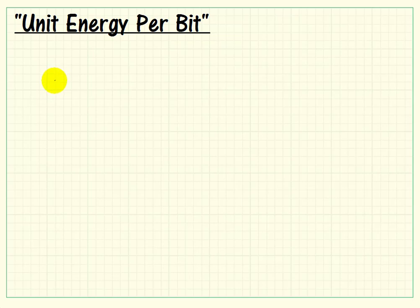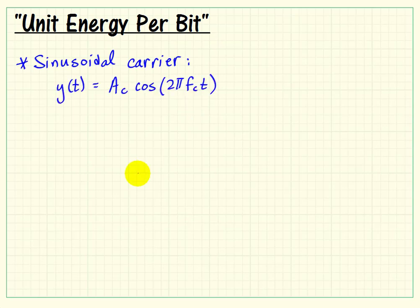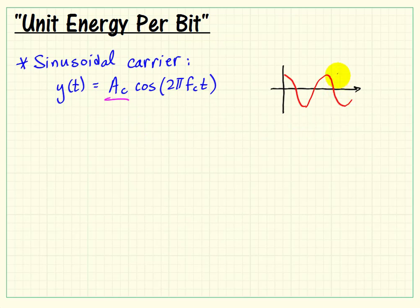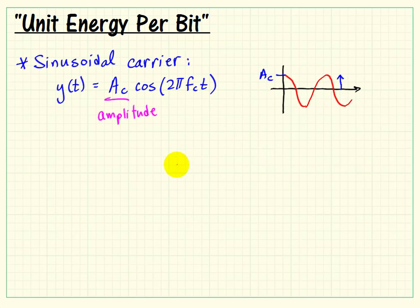The product modulator takes an incoming signal and multiplies it by a sinusoidal carrier of the form: amplitude times cosine(2π·fc·t), where fc is our carrier frequency. It has a special requirement of having so-called unit energy per bit. To help understand this, remember that the amplitude would be the deviation of the sinusoid from zero.